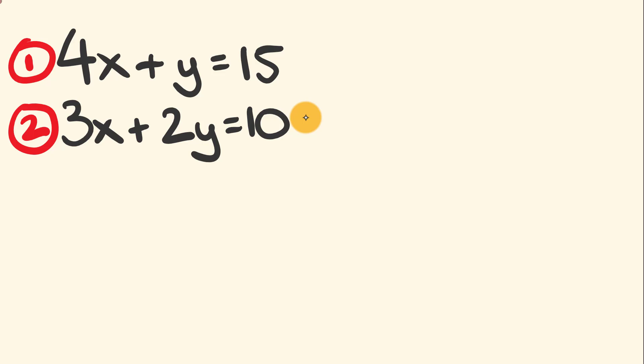We're going to solve these using the elimination method. We'll start by looking at the coefficients in front of each variable. The variables are those letters, and the coefficients are the numbers in front of them. We have 4x and 3x—they're not the same. And we have y and 2y—they're not the same.